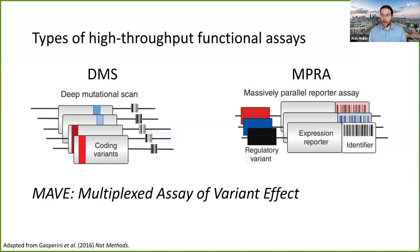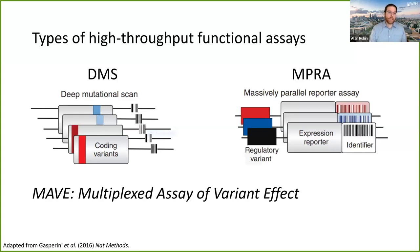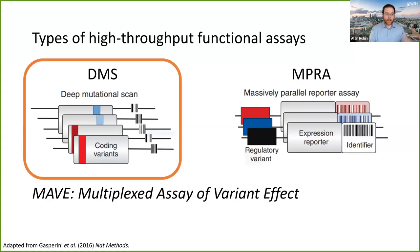The first type is DMS, or deep mutational scanning. These are assays of coding regions, generally speaking. The other type commonly used is MPRAs, or massively parallel reporter assays, which are more concerned with non-coding elements, particularly promoters and enhancers or other elements that can drive expression. Most of the things I'm going to talk about today in terms of how we look at, store, and use the data can be applied to either of these, but most of my expertise is on the deep mutational scanning side looking at coding variants.